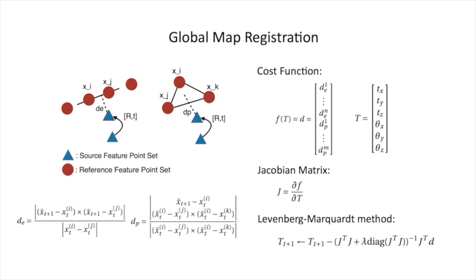Now we have multiple local maps and their corresponding feature points, so we should find correspondences between them in order to recover the motion between two consecutive maps. For edge points in the source feature point set, we find the two nearest neighbors in the reference feature point set and fit a line by them. We want to minimize the distance between the transformed source point and the line, denoted as DE. For the planar points, we find the three nearest neighbors to fit a plane and minimize the distance DP, which is the distance between the transformed planar point and the plane. The cost function is built by concatenating DE's and DP's. The input is the translation and rotation along x, y, and z-axis. We derive the Jacobian matrix by taking the derivative of F with respect to T, and using the Levenberg-Marquardt method, we do non-linear optimization to get the optimal translation and rotation for two consecutive local maps.